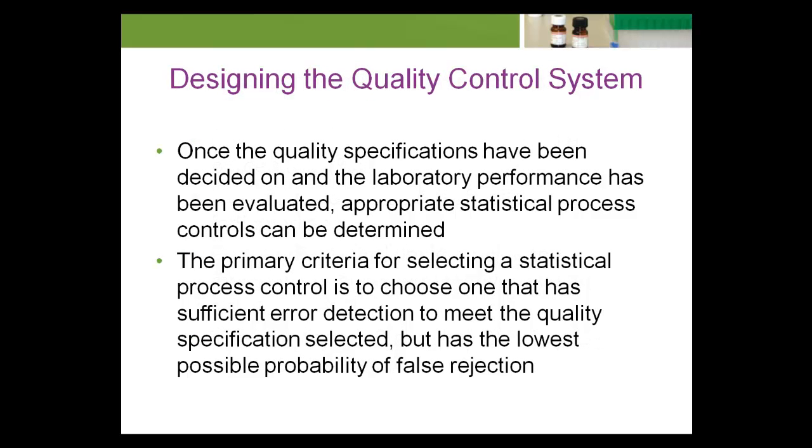In most QC rules, there is a trade-off between error detection power and false rejection rate. The error detection power is the probability of a QC rule of detecting an error. However, the false rejection rate is the probability that the rule will indicate a problem when none exists. The essence of good quality control design is to select QC rules that have sufficient error detection power to detect critical errors but the lowest possible false rejection rate.